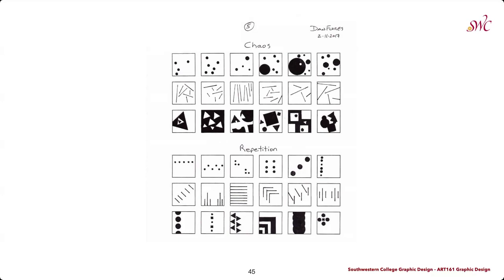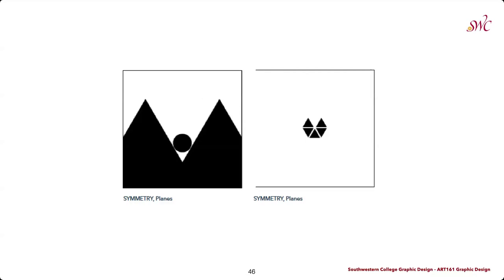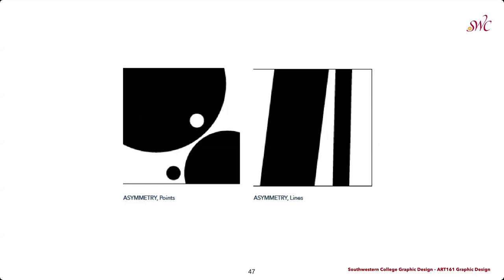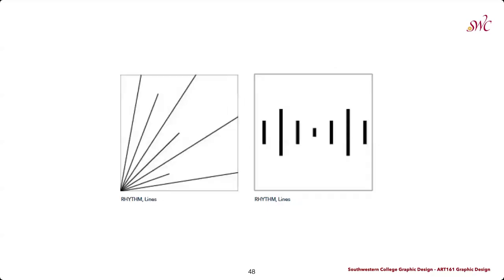To begin this project, you're going to start with different sketches based on these principles, working with points, lines, and planes. You can see an example for the principles of chaos and repetition — which we'll get into in the next lecture — using only points, only lines, and only planes, with planes being perfect circles, perfect triangles, and perfect squares within these sketches. Once you have finished all your sketches, you'll be working in Adobe Illustrator to graphically translate these sketches into vector elements. We can see the use of points showcasing asymmetry on the left and lines showcasing asymmetry on the right.